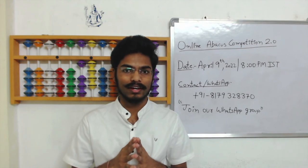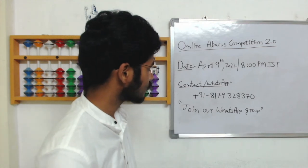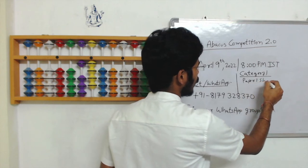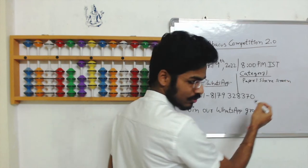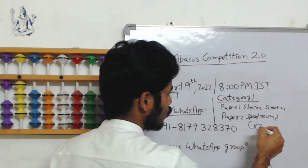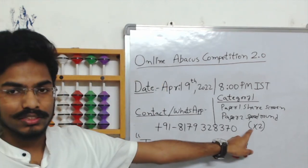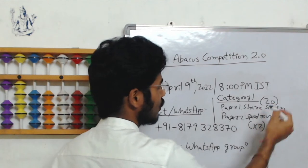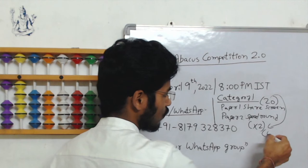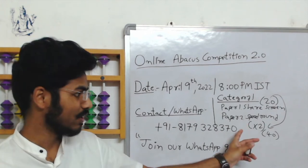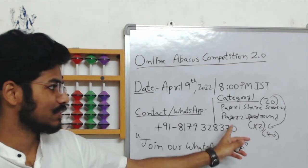One important thing to keep in mind: in both Category 1 and Category 2, the speed round has extra marks — double weightage compared to the paper round. For example, in Category 1, Paper 1 is on abacus on paper and Paper 2 is the speed round on the website. The website speed round has double weightage. If you do 20 questions in Paper 1 you get 20 marks, but if you do 20 questions in the speed round you get 40 marks. So practice more on the website.